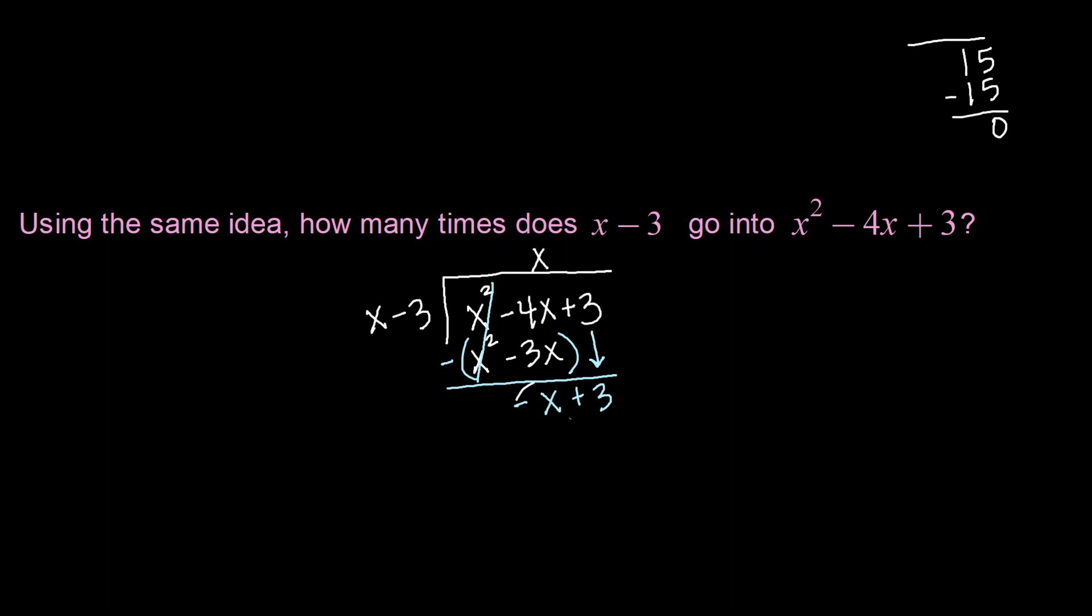x times what makes negative x? Well, that would be x times negative 1. So we write negative 1 up above and then distribute it to our x minus 3. Negative 1 times x would make negative x. And negative 1 times negative 3 would make positive 3. Once again, we want to subtract that whole entire polynomial. So negative x minus negative x is like negative x plus x, which zeroes out. And 3 minus 3 makes 0. So again, we got a zero remainder, which means it does go in evenly. So x squared minus 4x plus 3 can be written as x minus 3 times what we got up here, x minus 1.